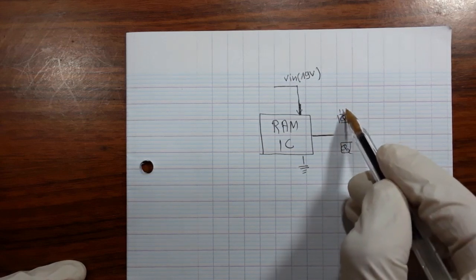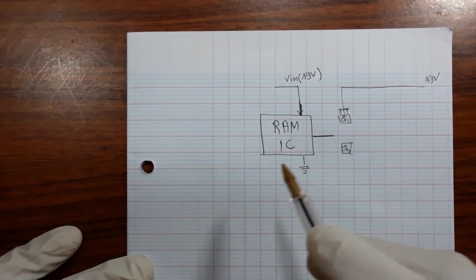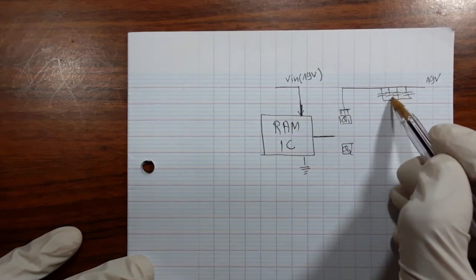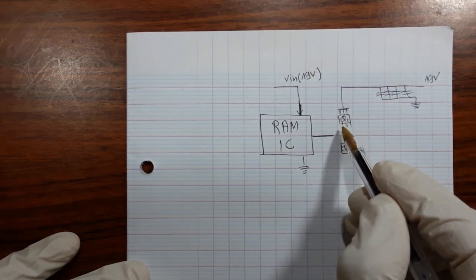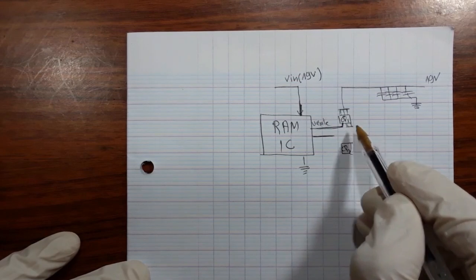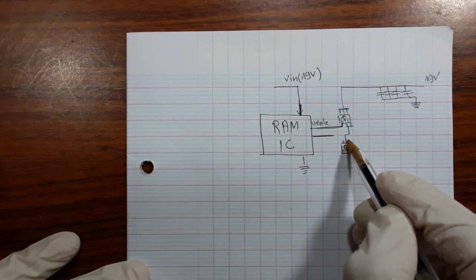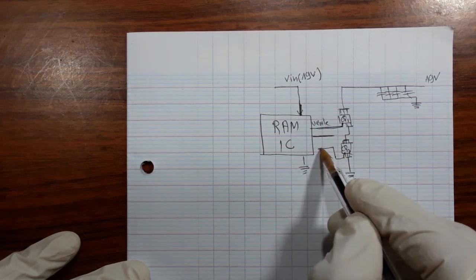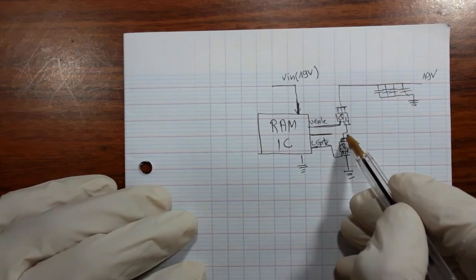This is the drain of this MOSFET, connected to another 19-volt source. Here we have PF capacitors. Here we have the source and gate — this is the upper gate. The source of Q1 is connected to the drain of Q2. The source of Q2 connects to ground, and the gate of Q2 connects to the IC — this is the lower gate.